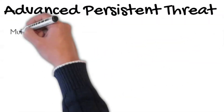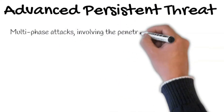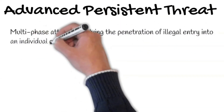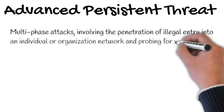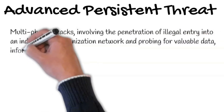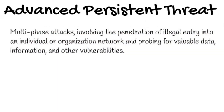APT can therefore be seen as multi-phase attacks involving the penetration and illegal entry into an individual or organization's network, and probing for valuable data, information, and other vulnerabilities. The government can also finance an APT attack. They do this when they wish to source information from other countries and also to influence the public interest of the target country.